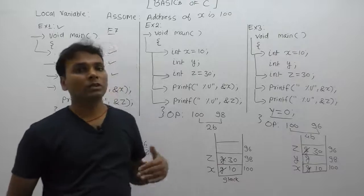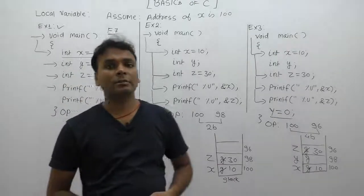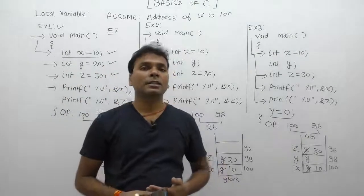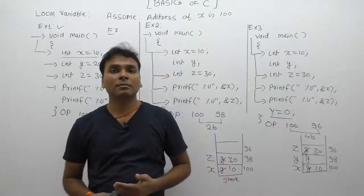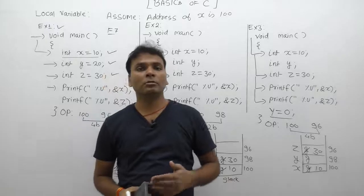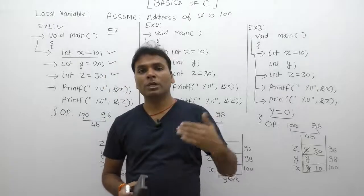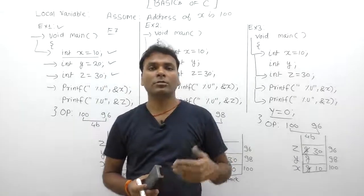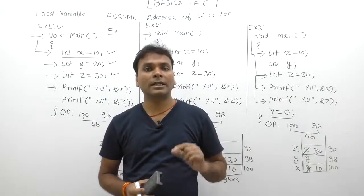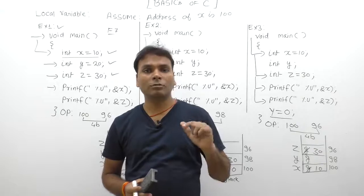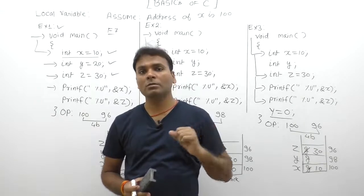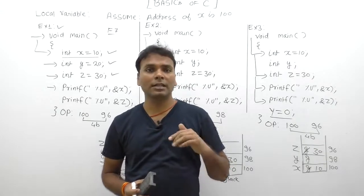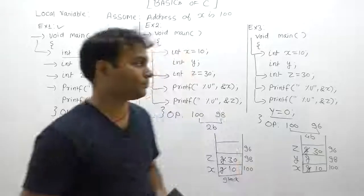The final conclusion is: inside a C program, memory allocation is performed only for used variables, not for unused variables. If a variable is accessed at least one time throughout the program, it is considered a used variable.